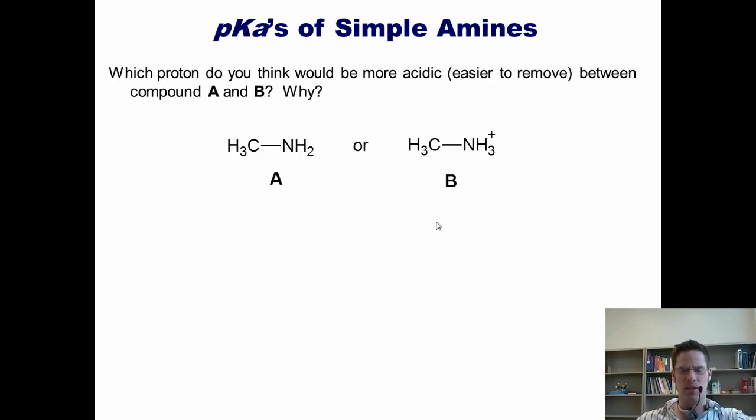I'll now introduce you to the general amine pKa values by asking the following question. Which proton do you think would be more acidic, or that is, easier to remove, between compounds A and B? So I've got compound A that's completely neutral. And compound B, where my nitrogen has been protonated with one extra proton, so it's got a positive charge. Which of these two protons would you think would be more reactive, or more acidic? Once you come up with your answer to that question, I want you to answer the question, why? If you wish, you can pause the video right now to answer this question for yourself before moving forward.